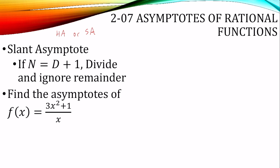Let's find all the asymptotes of this function. For the vertical asymptote, we try to factor but can't. Set the denominator equal to 0: the vertical asymptote is x equals 0. For the horizontal asymptote, the degree of the numerator is 2 and the degree of the denominator is 1, so n is greater than d — there is no horizontal asymptote.